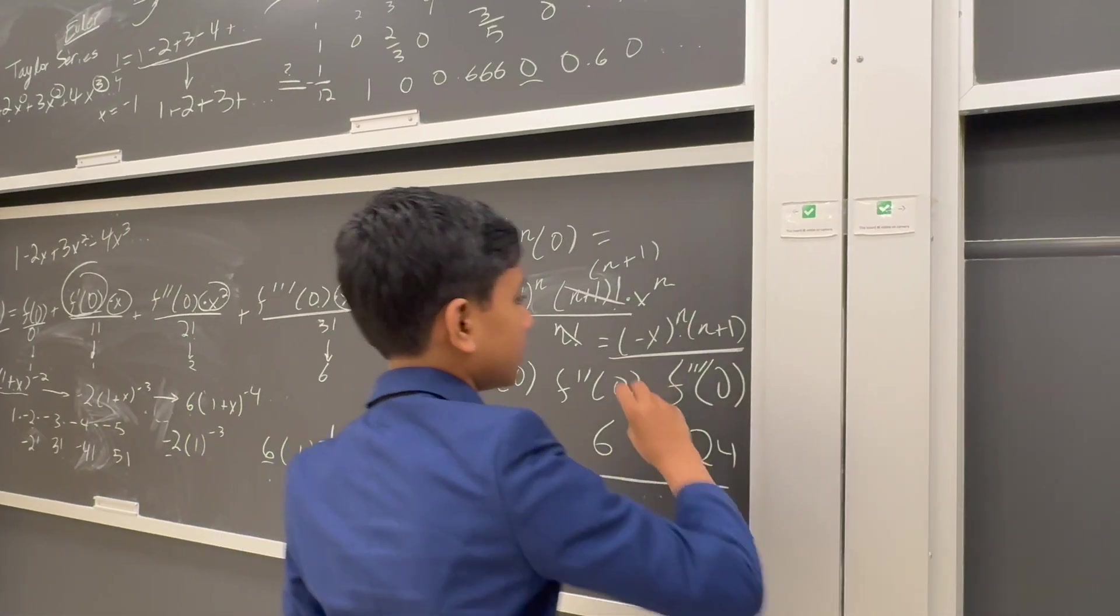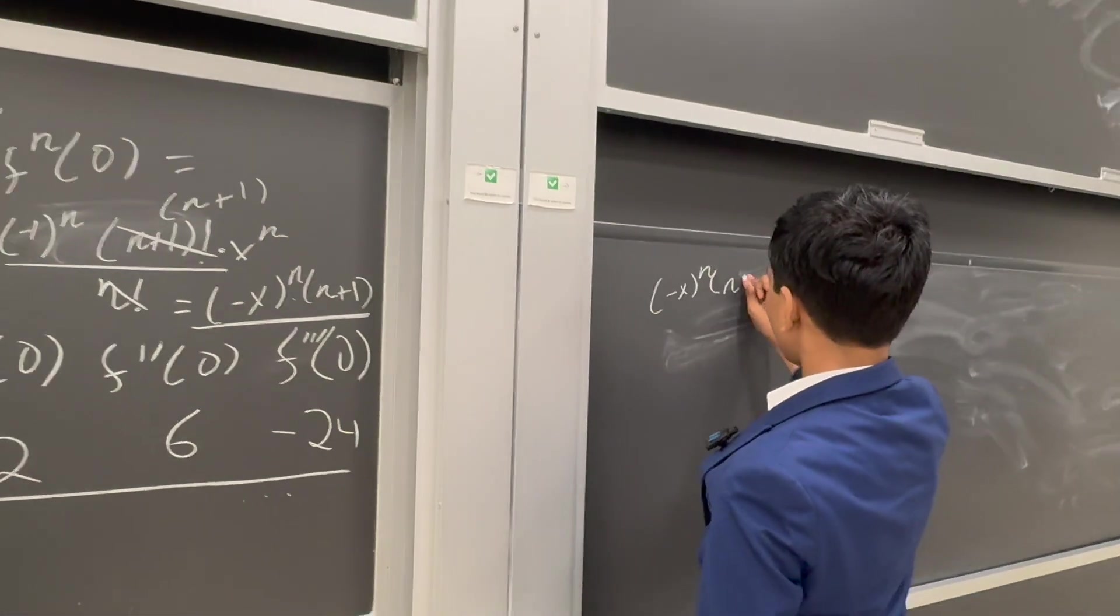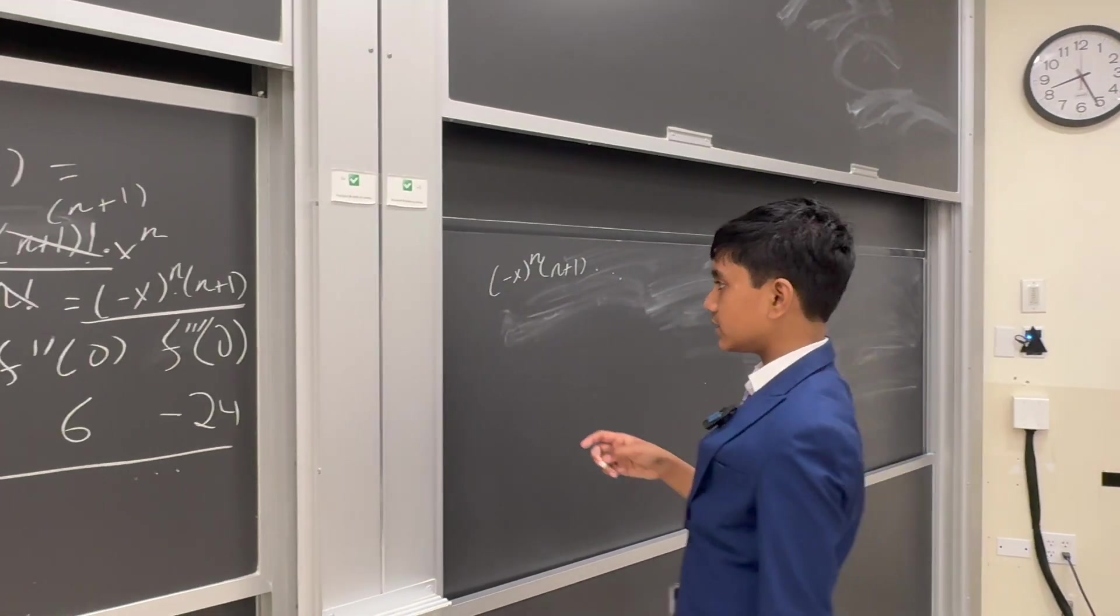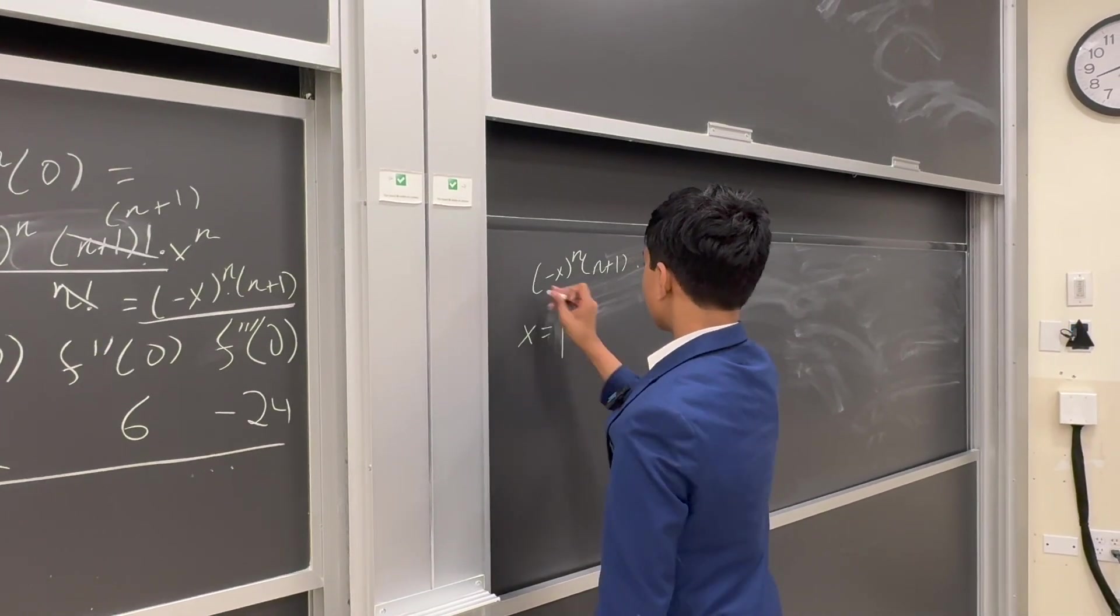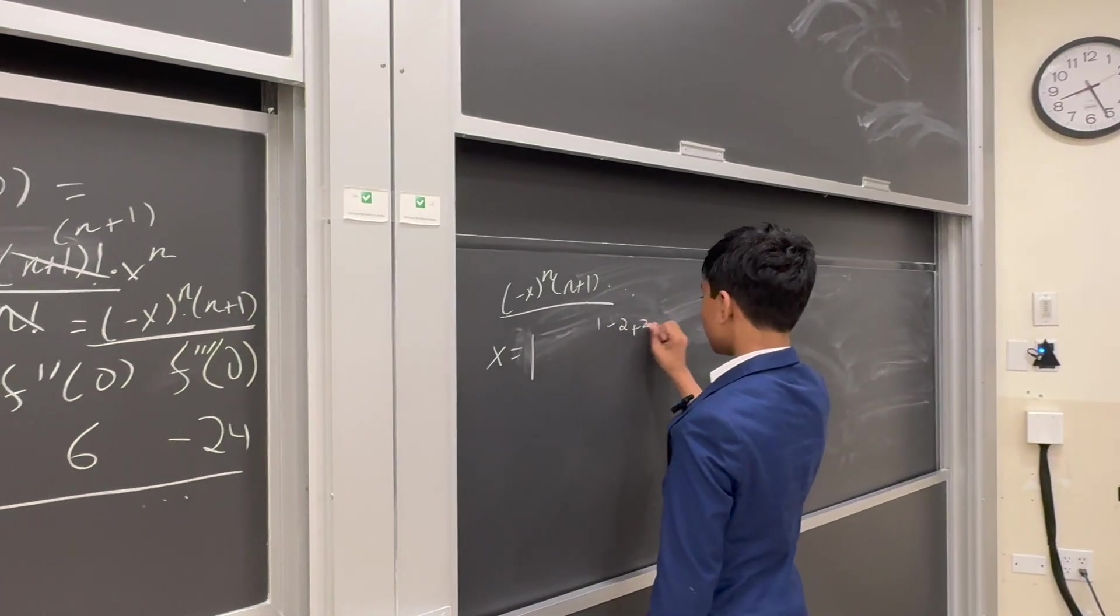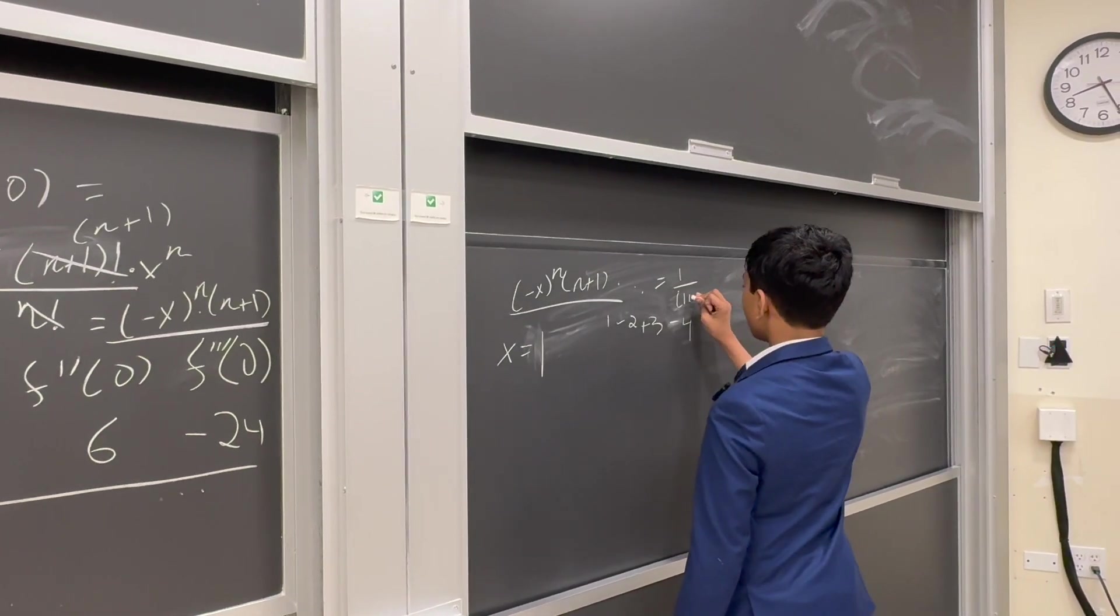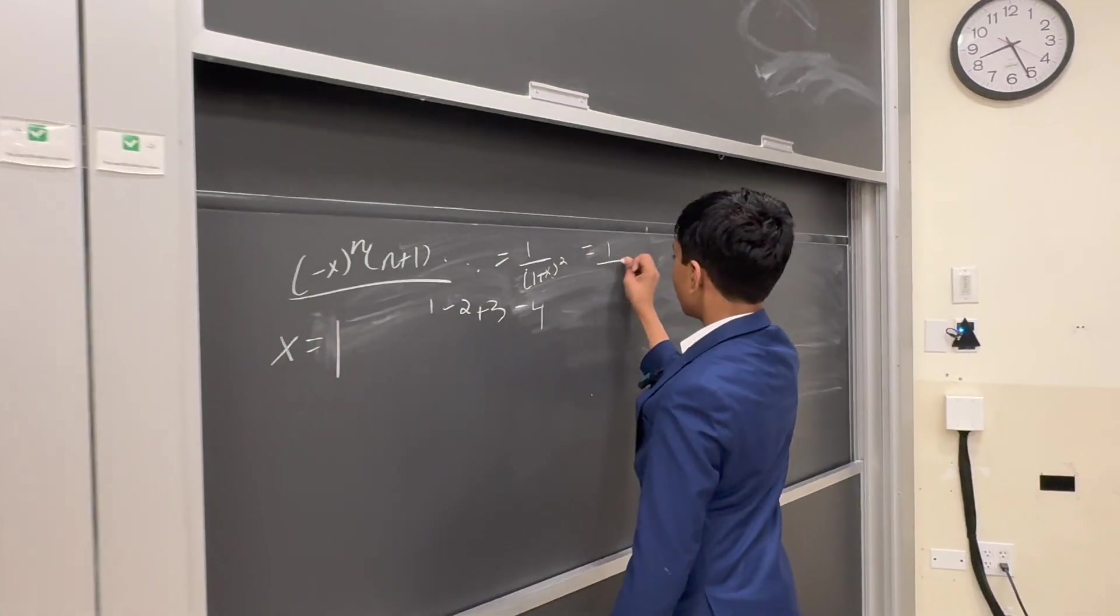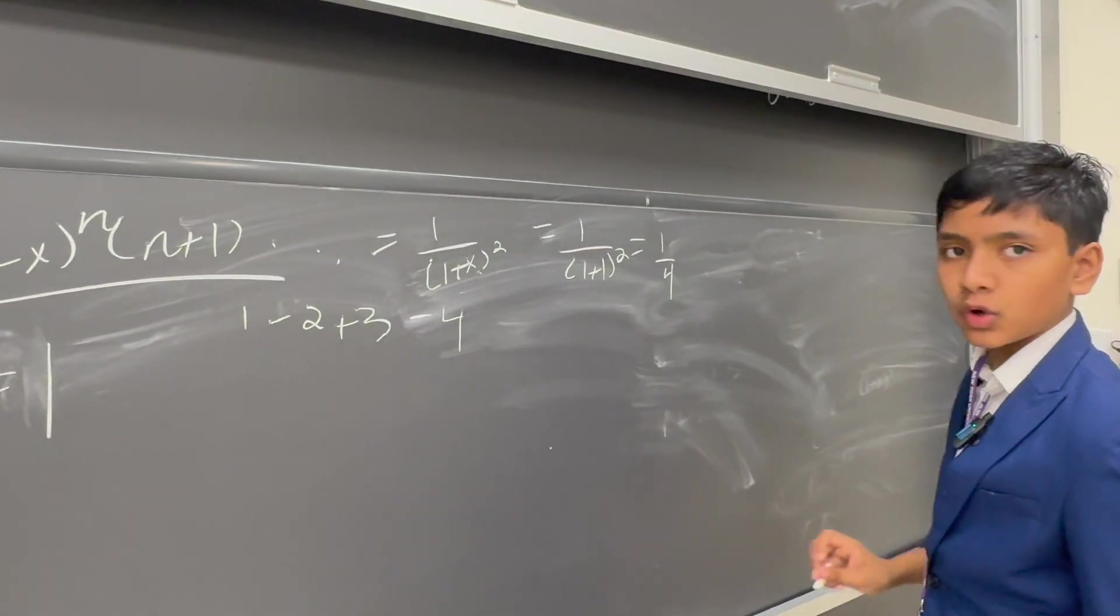So we have minus x to the n times (n plus 1), etc. And all we have to do to satisfy this is just plug in x equals positive 1, in order to have what we want, which is 1 minus 2 plus 3 minus 4. But wait a second. This Taylor expansion is equal to 1 over (1 plus x) squared. So what happens when we plug 1 into that? Get 1 over (1 plus 1) squared, which is, surprisingly, 1 over 4.